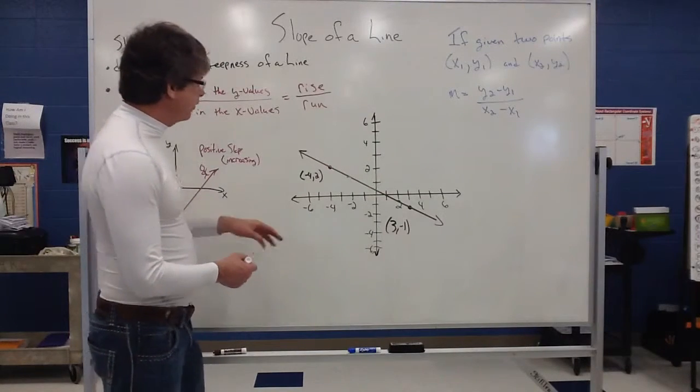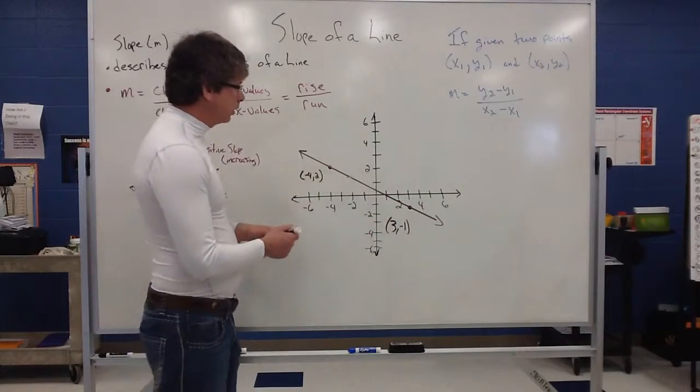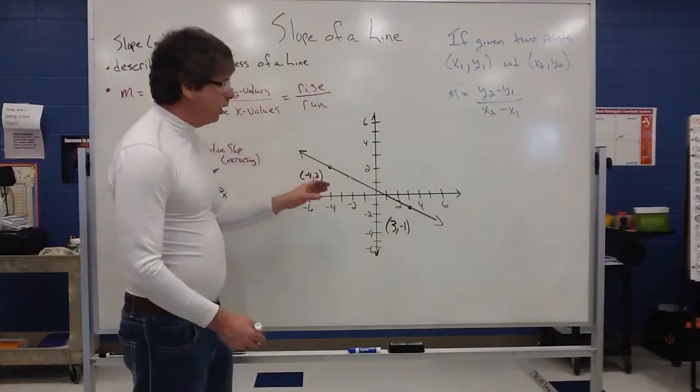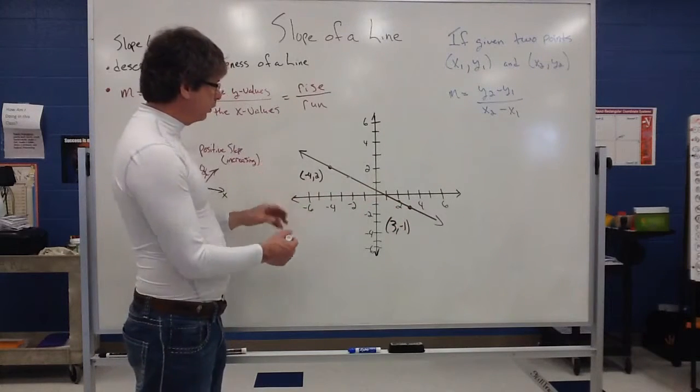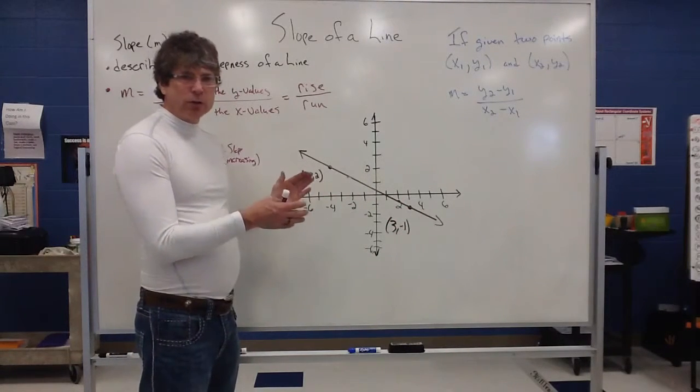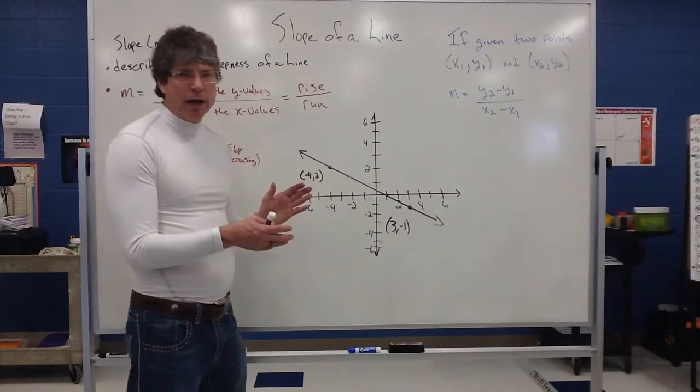So to find the slope, I have to move from a point to another point on the graph. And these are the two points I've identified. Now I could identify other points on the graph, but that's the only two I've identified at this point. But it doesn't really matter what points you identify. The slope should always be the same. The slope of a line is unique.